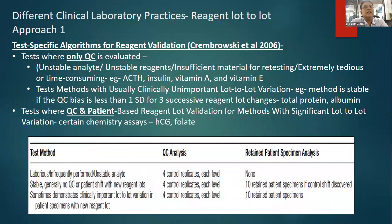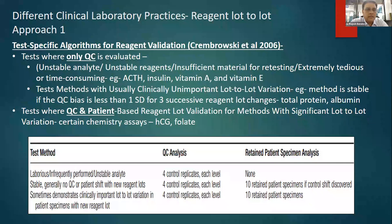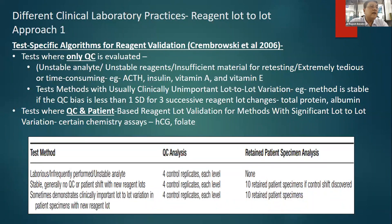Second, when we talk about analytes where our own IQC data shows the analyte is extremely robust — the best example being basic biochemistry parameters like total protein and albumin — if we go back and look at our IQC data for these, it is very robust with hardly any IQC outliers. The Levey-Jennings chart for albumin or total protein is one of the best. If consistently over the last three to six months, across different reagent lots, the mean and standard deviation have hardly deviated, then you may not require a large number of patient samples for lot-to-lot validation.